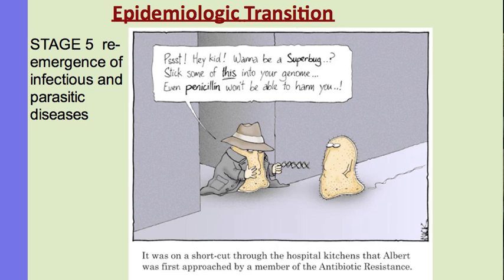A cartoon illustrates the re-emergence of infectious and parasitic diseases in stage 5: superbugs become immune to the medicines that once cured these diseases, leaving no effective treatment. The World Health Organization has expressed serious concern about this, with recent news reports suggesting they fear a global epidemic as widespread resistance to antibiotics and other medicines continues to grow.